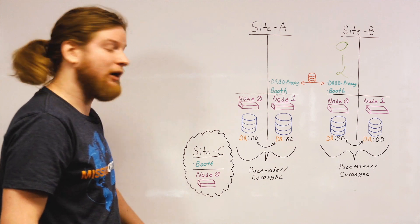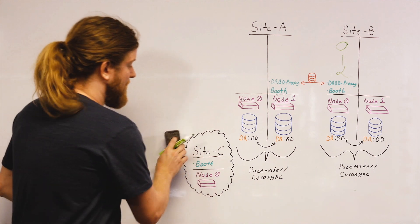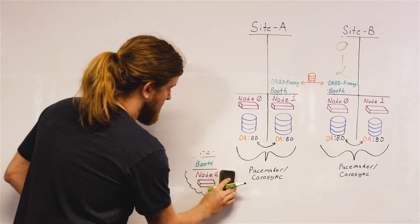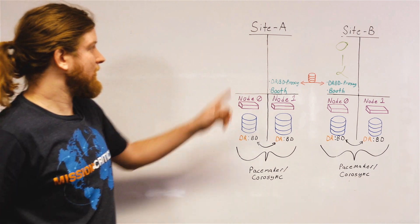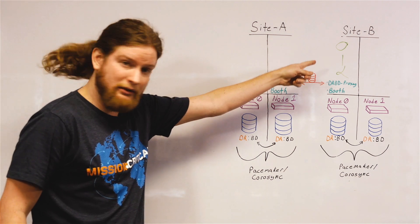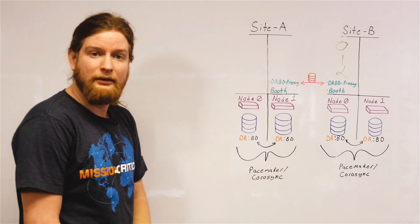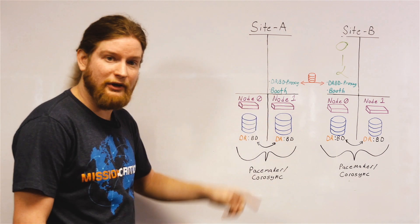And if the Booth arbitrator fails and is no longer able to participate in votes, as long as we don't have a failure in site A and B, and they can still see each other, then we can still grant and revoke tickets between the two.